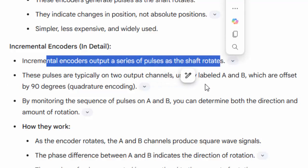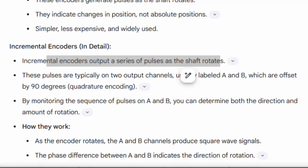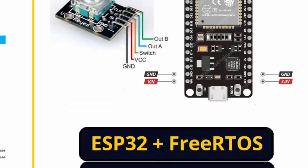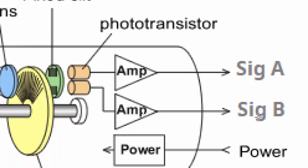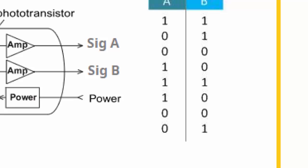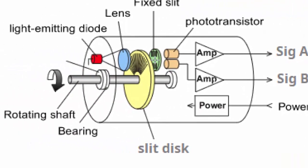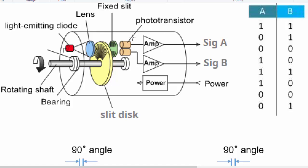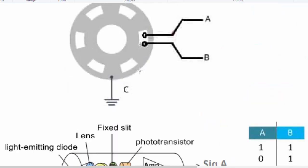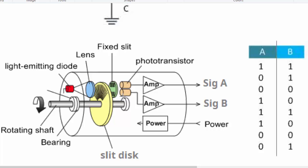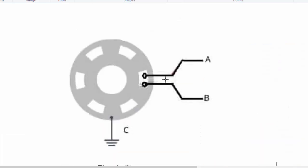Incremental encoders output a series of pulses as the shaft rotates. They usually have two pulses, A and B. Looking at the overall structure, we have a rotating shaft, a bearing, and photo transistor sensors connected to an amplifier which provide signals A and B. We also have one light emitting diode fed through a lens with a fixed slit.